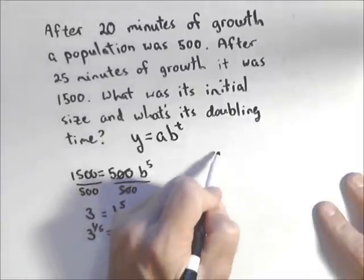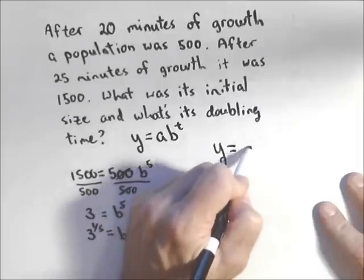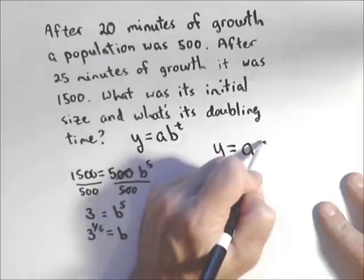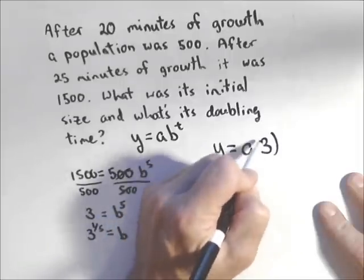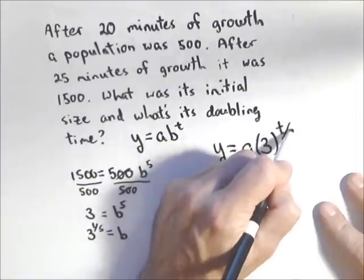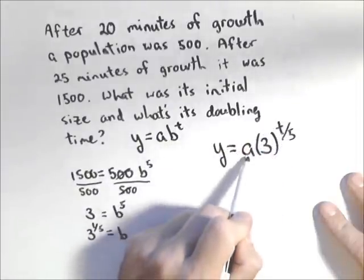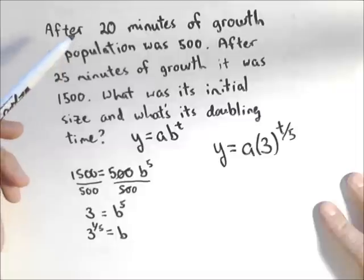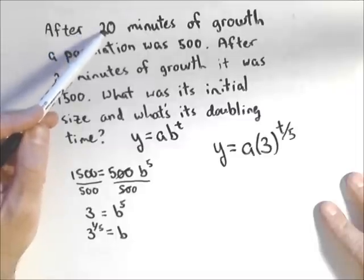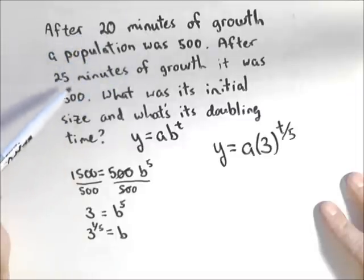I know it's going to have the form y equals a times three to the one-fifth, or as I like to write it, t over five. Now, it's the a that we need. We're going to use some of our given information. We can either use that after 20 minutes it's 500, or 25 minutes it's 1,500. It's up to us.